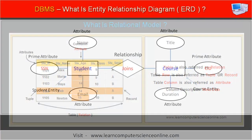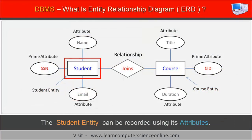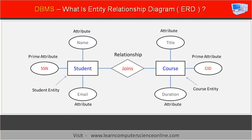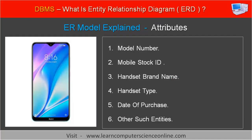For example, the student entity can be recorded into the database using its attributes such as student ID, first name, last name, date of birth, the course title enrolled by the student, and other such attributes. Similarly, the mobile handset entity can be recorded using its attributes such as mobile model number, stock ID, brand name, model type, date of purchase, and other such attributes.